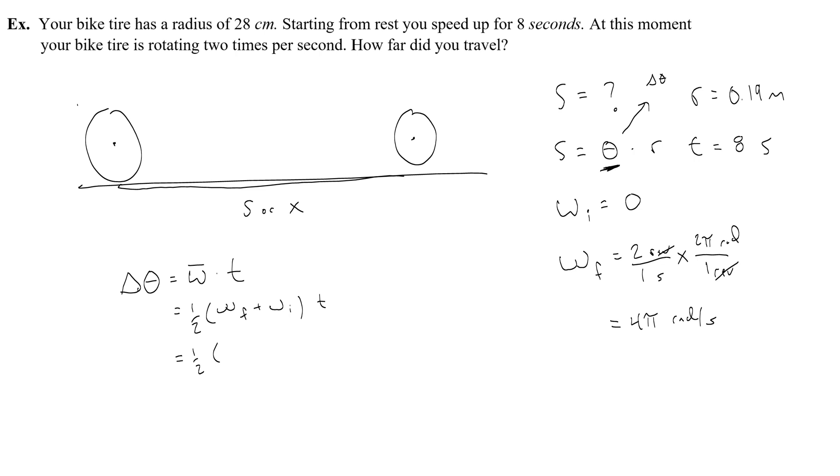Okay, so I would take 4 pi radians per second, the initial is 0, so I would add nothing to that, and then multiply that all by 8 seconds, which is going to give me half of 4 pi is 2 pi, and then times 8 is 16 pi, so 16 pi radians, and you can leave it in 16 pi radians if you want.